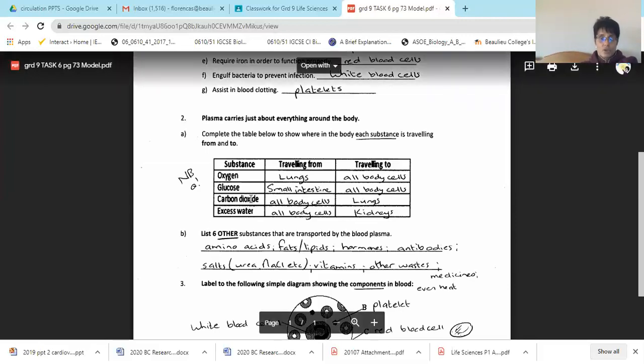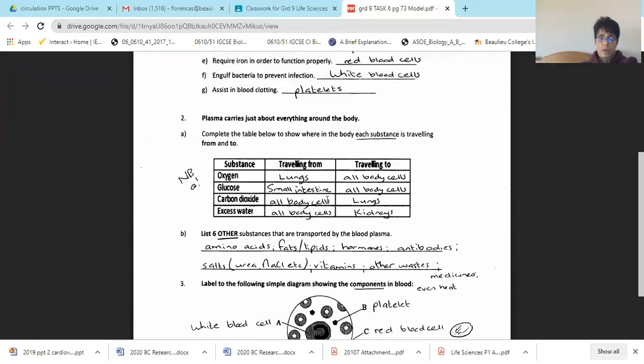So where does CO2 come from? All the body cells. Where's it going? To the lungs. You're going to exhale it. Now your cells are also making water during cell respiration. So where does it come from? All the body cells, excess water. Where is it going to go? To your kidneys. And your kidneys will make more urine.